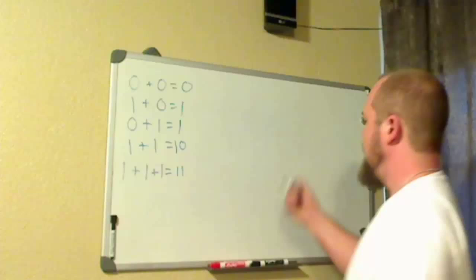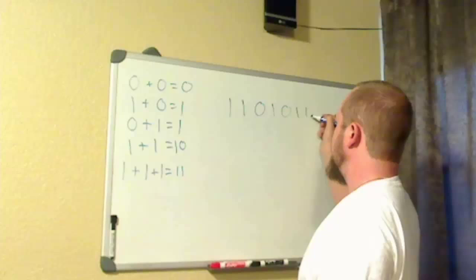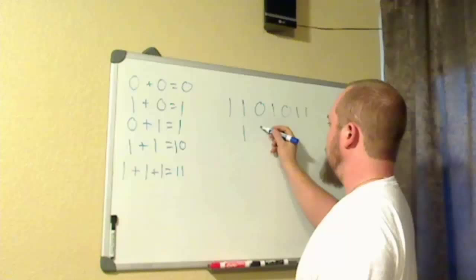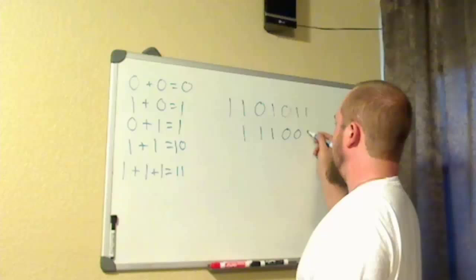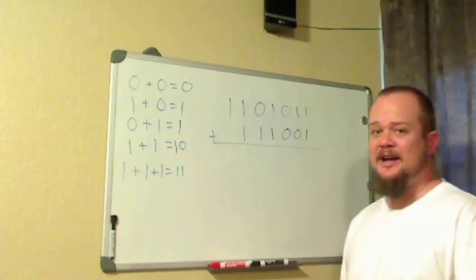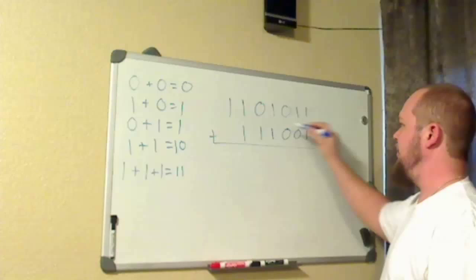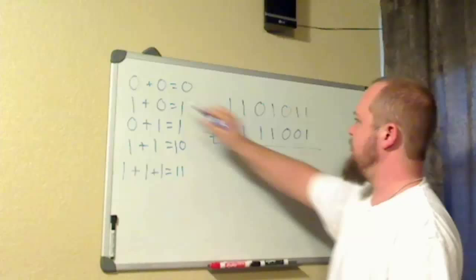Hi there. Alright, let's go ahead and get started with an addition problem in binary. Let's take 1101011 and let's add this to 111001. Luckily, performing addition in binary is very easy. Actually, all mathematical problems in binary are very simple because binary in itself is very simple. So, these right here are actually our only combinations that we will encounter when adding a two-column binary number together.